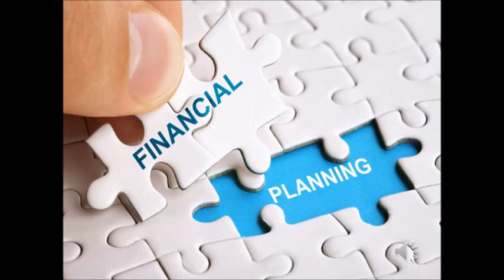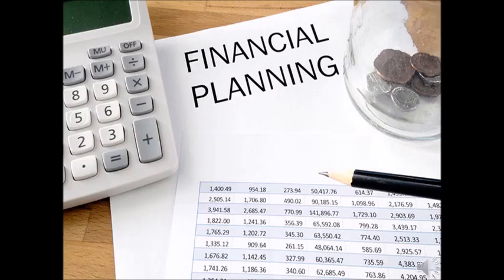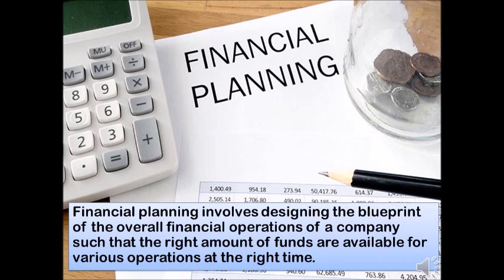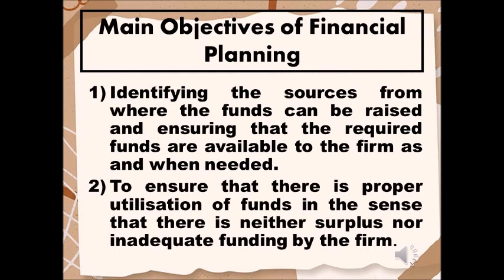And now, let's proceed to financial planning. Financial planning involves designing the blueprint of the overall financial operations of a company such that the right amount of funds are available for various operations at the right time. The main objectives of financial planning: first, identifying the sources from where funds can be raised and ensuring that the required funds are available to the firm as and when needed. For this, an estimation is made regarding the amount of funds required for various business operations.